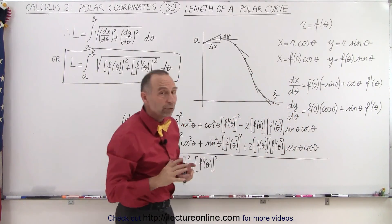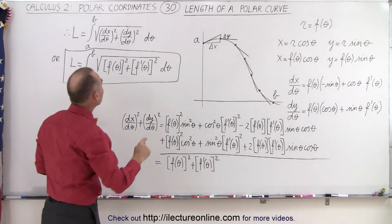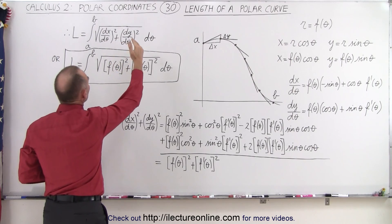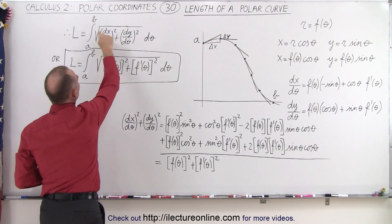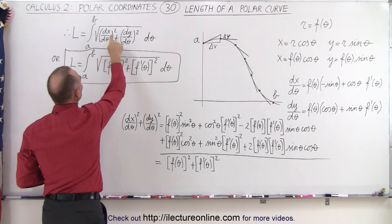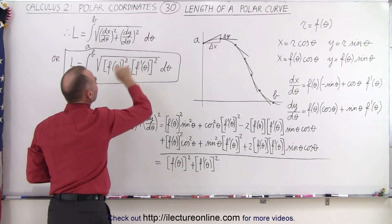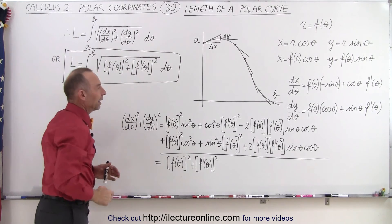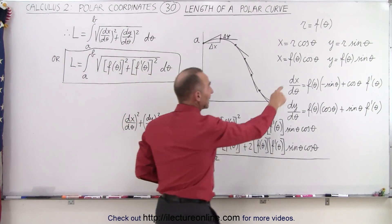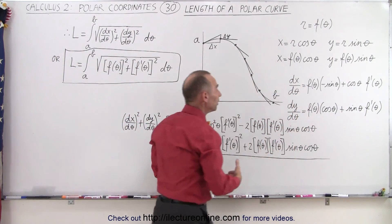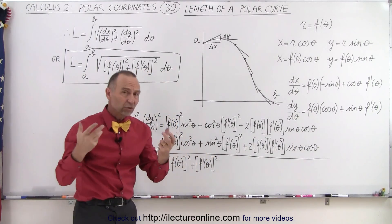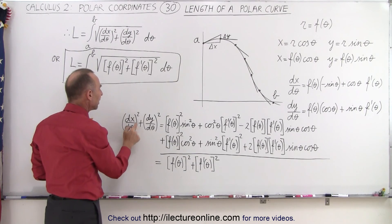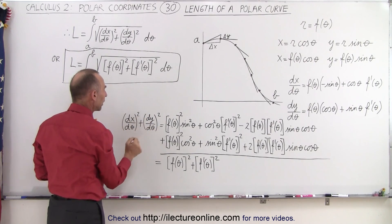The next thing we're going to do, looking forward, is recognizing that the length of a segment of a polar curve equals the integral of the square root of (dx/dθ)² + (dy/dθ)² dθ. So what we need to do is figure out what this expression is equal to. Since we have definitions for dx/dθ and dy/dθ, we just square both and add them together.